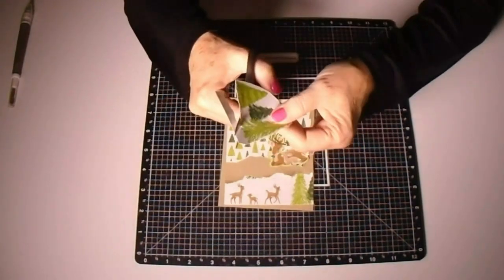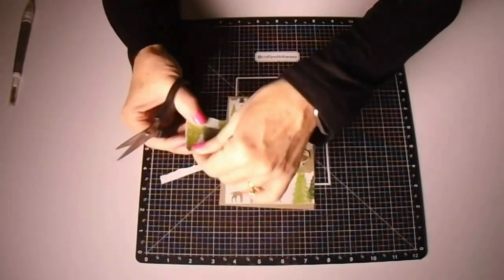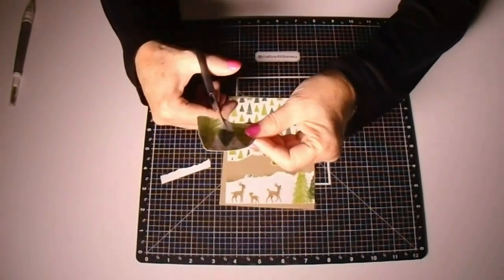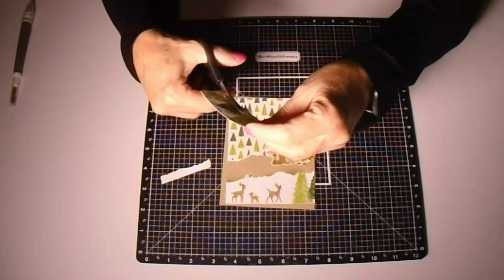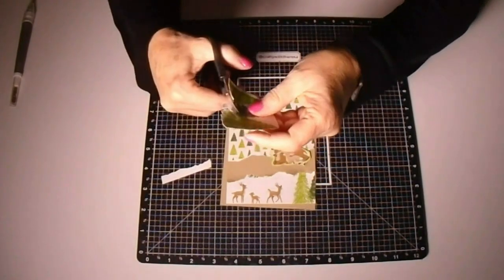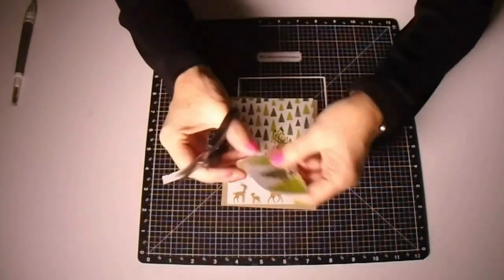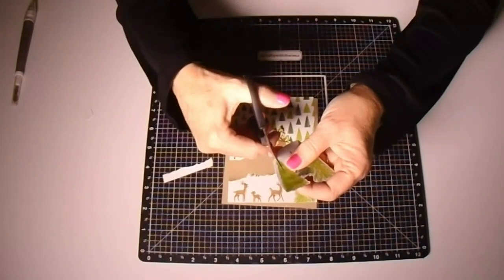Now I'm going to grab those large trees and I'm actually going to fussy cut them. Basically what that means is you're going to cut around those edges. When I'm doing my fussy cutting, I kind of move my scissors back and forth. I don't move the paper as much as I do the scissors. And I feel like that makes it easier to get into those grooves.